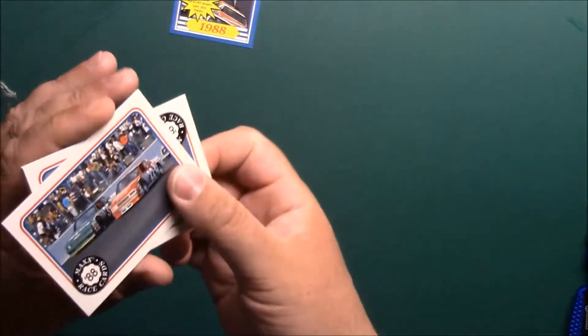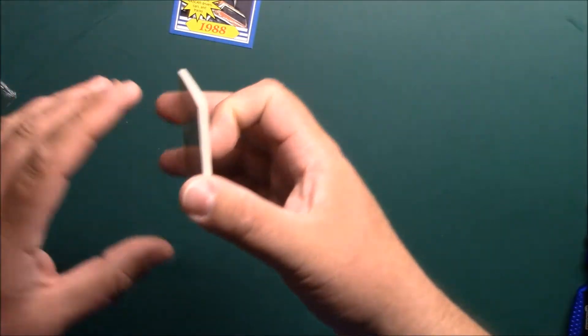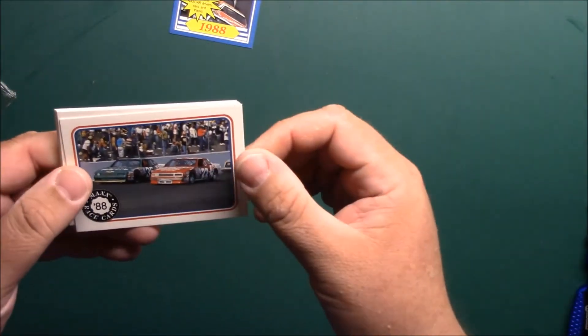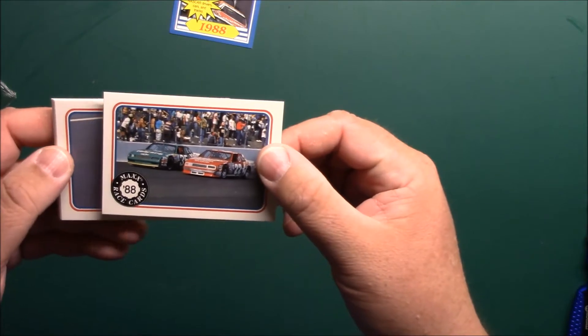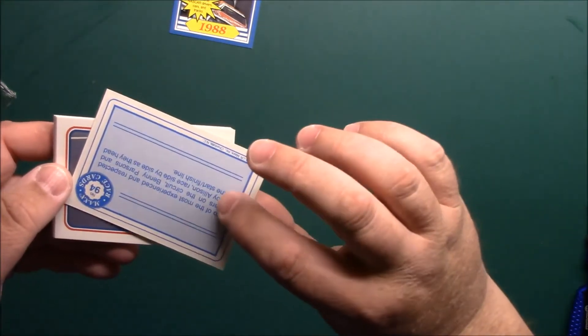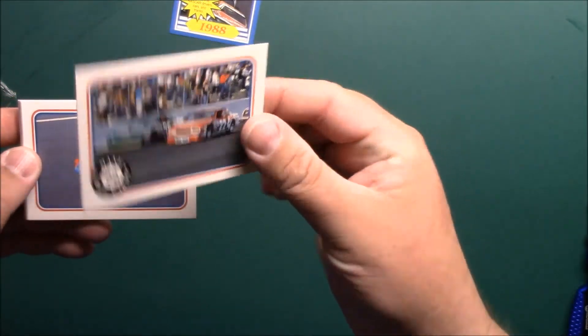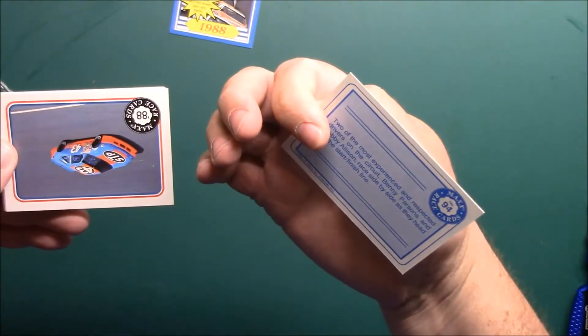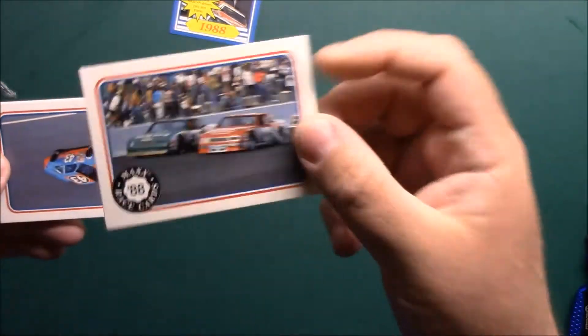Last time I looked these packs were going for 10 or 12 bucks a piece. I might be wrong now. So we got Benny Parsons and Bobby Allison side by side there.